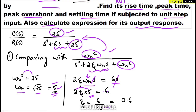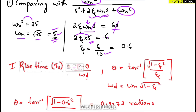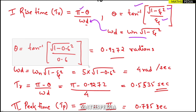With zeta and omega_n known, we can find all required quantities. Rise time t_r = (π − θ) / omega_d. Here theta = tan⁻¹(√(1 − zeta²) / zeta), and omega_d = omega_n · √(1 − zeta²). These two must be calculated first.